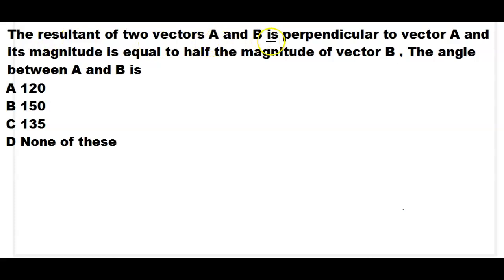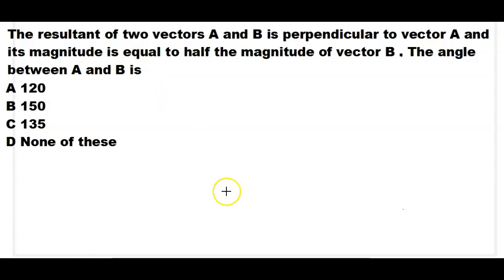The resultant of two vectors A and B is perpendicular to vector A, and its magnitude is equal to half of the magnitude of vector B. The angle between A and B is to be determined.